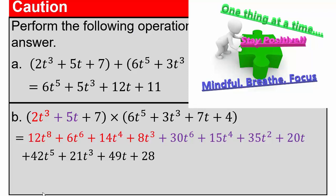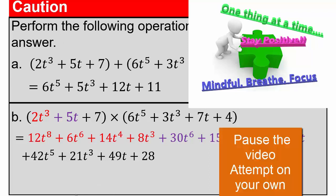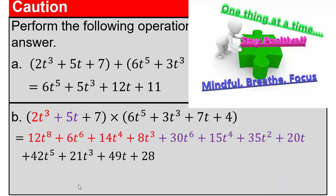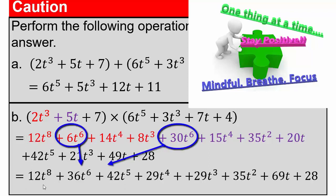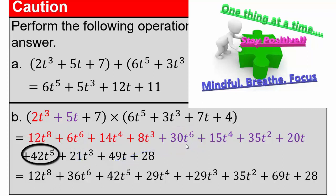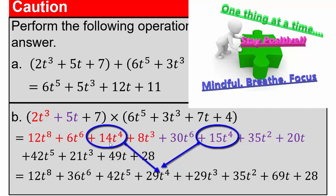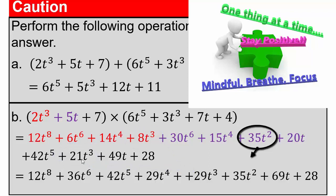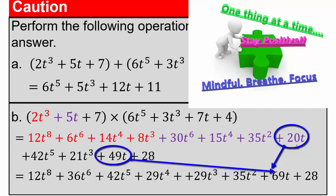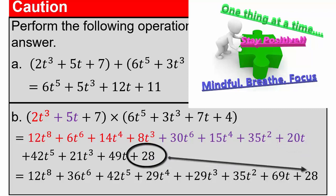Simplifying the answer means adding like terms. Starting with the highest exponent: 12t to the 8th stays. For t to the 6th: 6t to the 6th plus 30t to the 6th gives 36t to the 6th. 42t to the 5th — only one such term. 14t to the 4th plus 15t to the 4th gives 29t to the 4th. 8t cubed plus 21t cubed gives 29t cubed. 35t squared stays. 20t plus 49t gives 69t. And plus 28. So that would be our final answer.